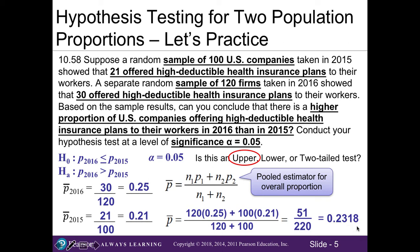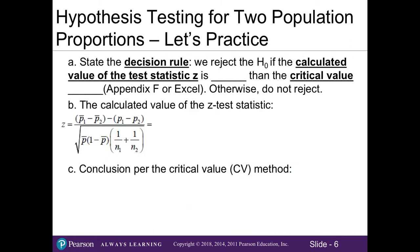Now we have all the numbers to plug into our test statistic: p̂₁ = 0.25 for 2016, p̂₂ = 0.21 for 2015, and pooled estimator p-bar = 0.2318. Our decision rule states that we will reject the null if the calculated Z is greater than the critical value. Since this is an upper-tailed test, using Appendix F or Excel, our critical value is 1.645. Otherwise, we do not reject the null.